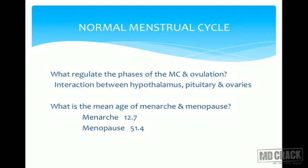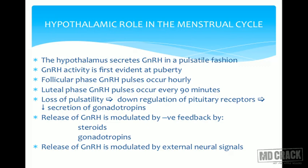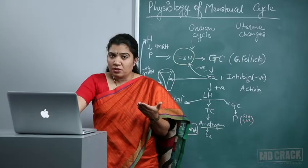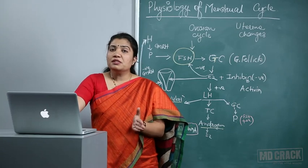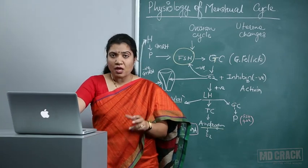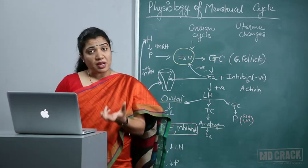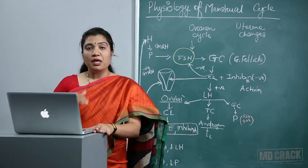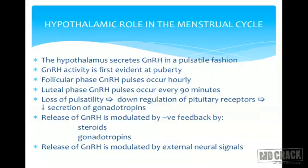Once it starts at menarche, the menstrual cycle continues till menopause, and on average the age of menopause is 51 years. Till puberty, GnRH secretions are not in pulsatile form. At puberty, the hypothalamus secretes GnRH in a pulsatile manner. This GnRH activity is first evident at puberty. In the follicular phase, GnRH pulses occur hourly, and in the luteal phase GnRH pulses occur every 90 minutes.